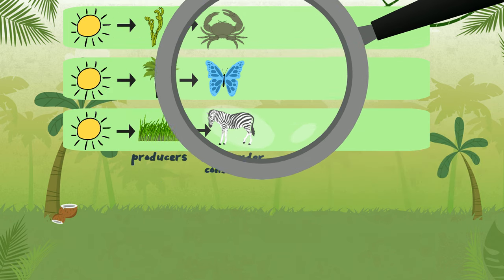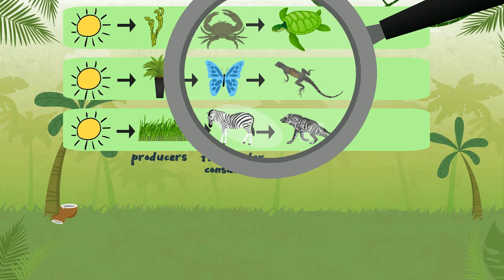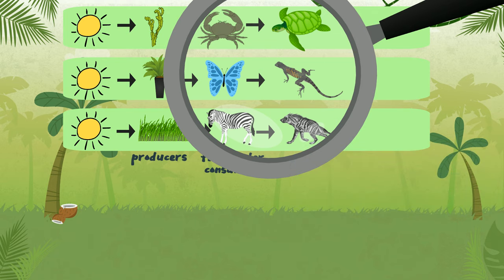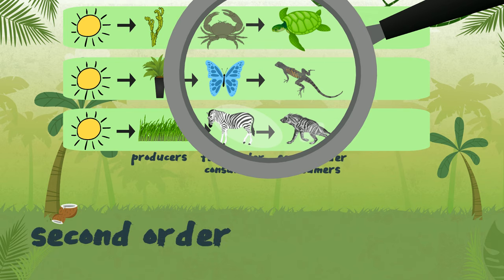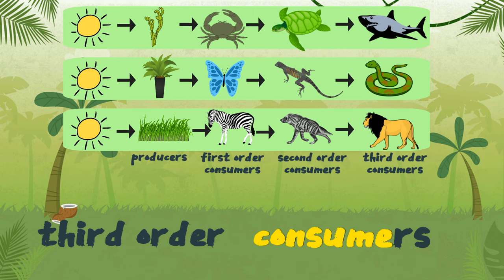Moving along to the next step of a food chain, we have animals that eat other animals — carnivores or omnivores. Because these animals eat first-order consumers, we call these animals second-order consumers. Next are third-order consumers: animals that eat other carnivores. The category of third-order consumers includes some animals at the top of the food chain, such as lions, killer whales, bears, and sharks.